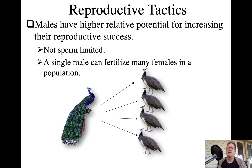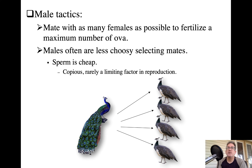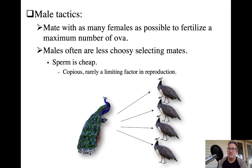Males tend to have really high reproductive potential. A single male, if he can control access to females or convince many females to mate with him, can mate with lots of females. The male tactic is typically to mate with as many females as possible to fertilize the maximum number of ova. Males tend not to be very choosy — sperm is cheap, and even mating with a lower quality female is better than nothing since copulation takes just a couple of seconds.